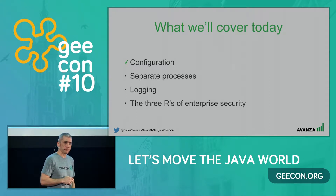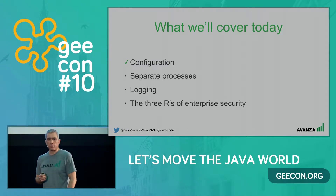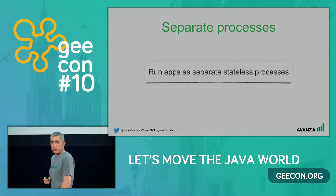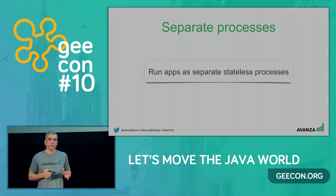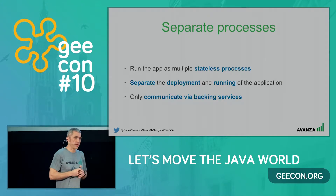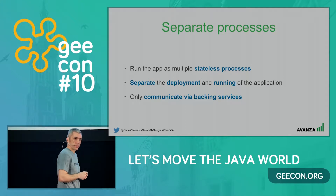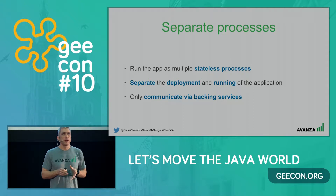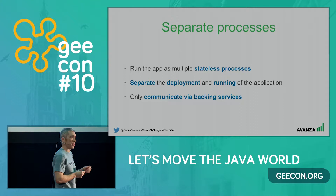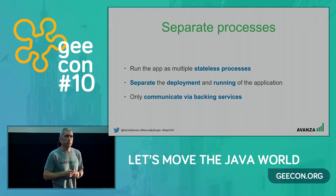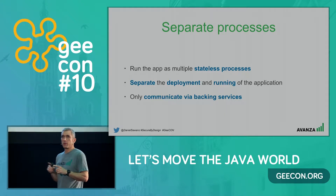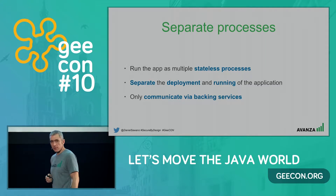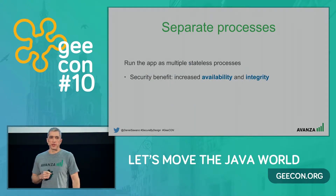Another main piece of advice when building cloud-native applications is to run your application as a stateless process. I break this down into three subcategories interesting from a security point of view: you want to be able to run the application as multiple stateless processes, you should think about separating the deployment and the actual running of the application, and you should only allow multiple stateless instances to communicate with each other using backing services. Let's take a look at each and see the security benefits.